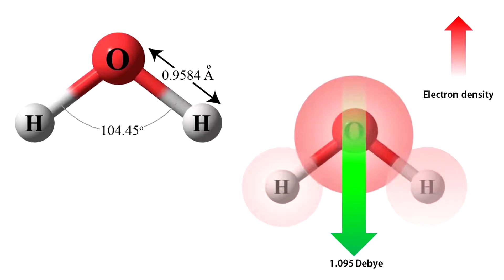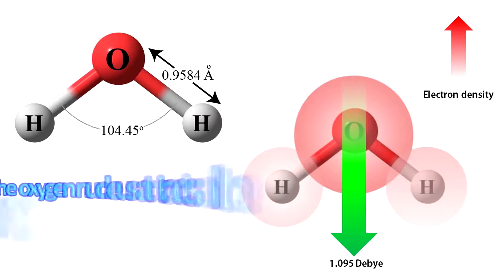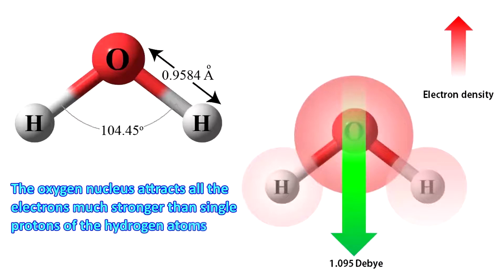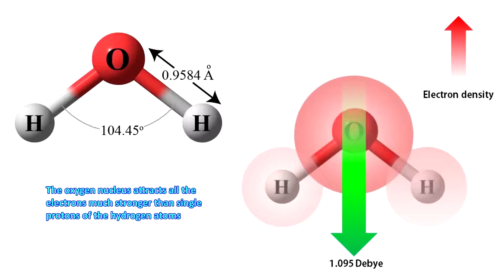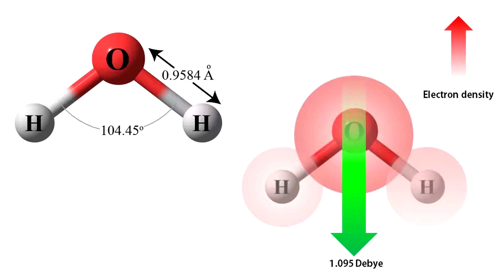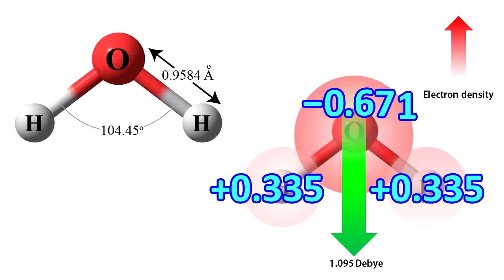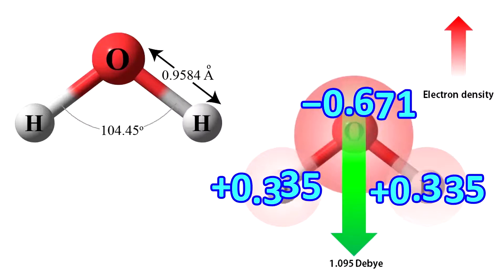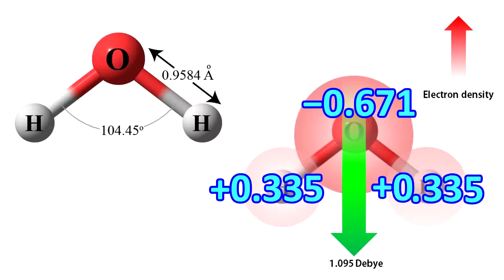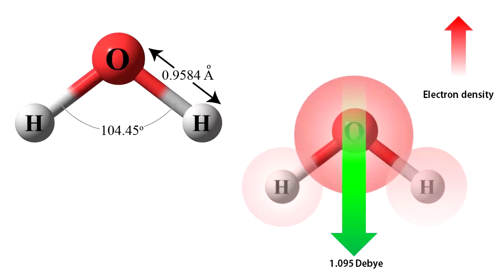Water molecules consist of an oxygen atom and two hydrogen atoms. Hydrogens are covalently bonded with the oxygen. The oxygen nucleus attracts all the electrons much stronger than the single protons of each hydrogen atom, which is why the electron cloud around the oxygen atom is 10 times denser than that around the hydrogen. This causes the oxygen to obtain a 0.671 unit partial negative charge and each hydrogen to obtain a 0.335 unit partial positive charge, giving rise to a molecular dipole moment of 1.095 debye, as you can see here.